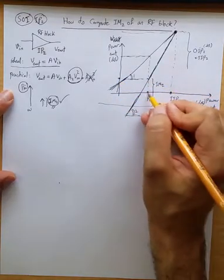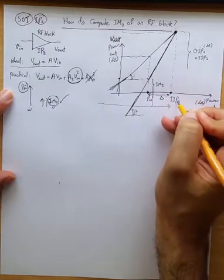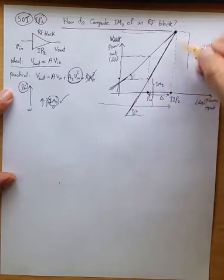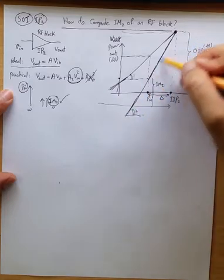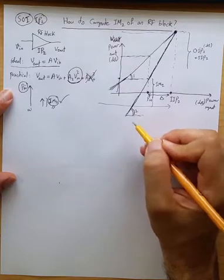Alright so this point P_in is delta dB below IIP2. We know the relationship between y-axis and x-axis on this line is as a scalar or as a tangent of 2.